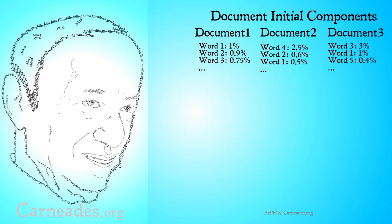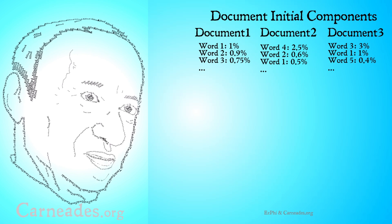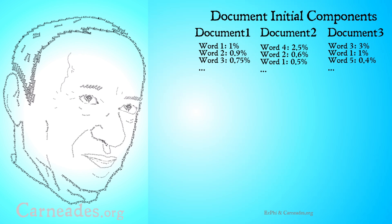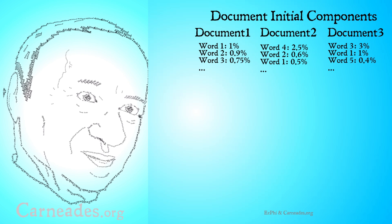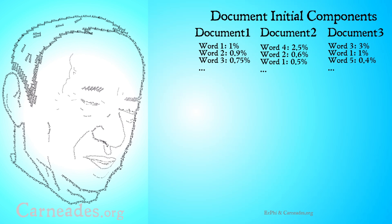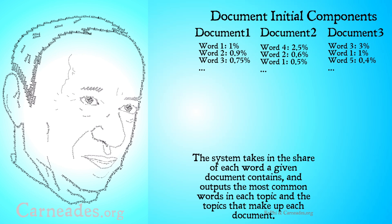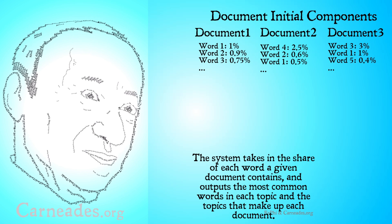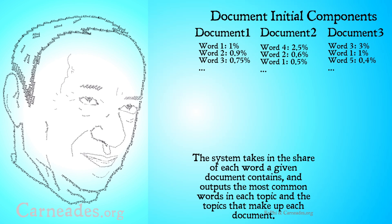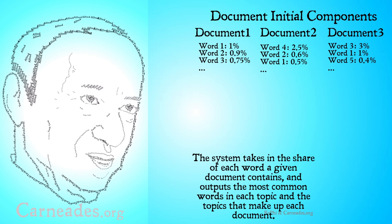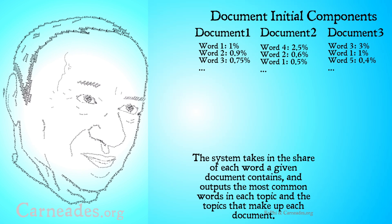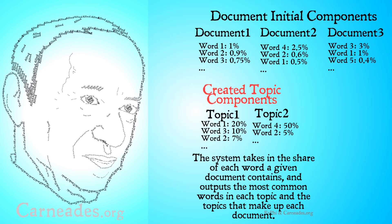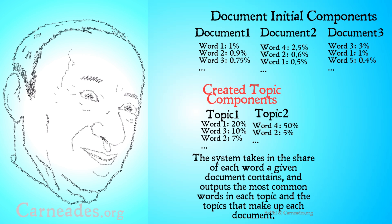Here's a very general example to start with. Imagine you have a couple of documents you're inputting into a topic model. Document one has word one at about 1%, word two at 0.9%, and so on. What you're actually inputting is the documents themselves. The computer then calculates what percentage of the document is each word. The system takes the share of each word that a given document contains and outputs the most common words in each topic and the topics that make up each document. Another thing you're inputting is how many topics there are.